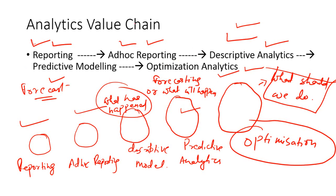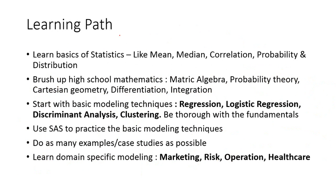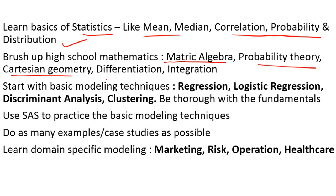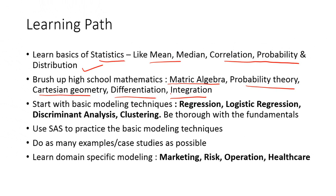Reporting could be the simplest technique and optimization is the most difficult one, although I could be proved wrong. So what should be the learning path? This is my own opinion — I am just telling you what I have followed and what I have seen many other people follow. Start with basic statistics like learning mean, median, correlation, probability, and distribution. Then brush up your high school mathematics — if you have forgotten matrix algebra, probability theory, Cartesian geometry, or differentiation and integration, just learn the basics. Start with basic modeling techniques like regression, logistic regression, discriminant analysis, and clustering, and be thorough with the fundamentals.